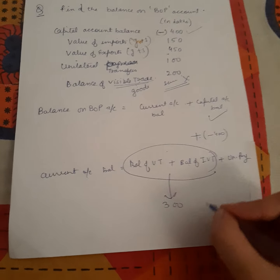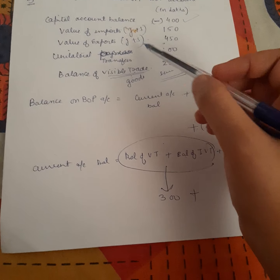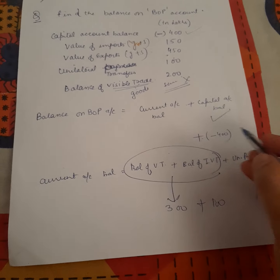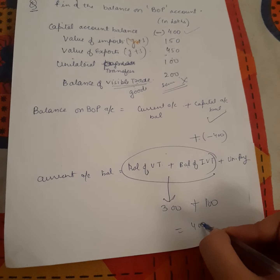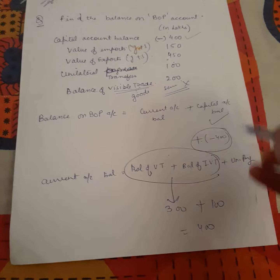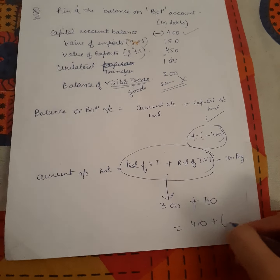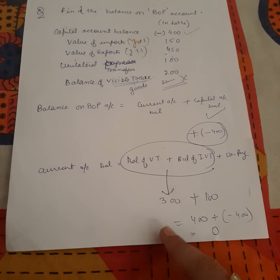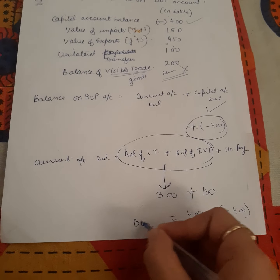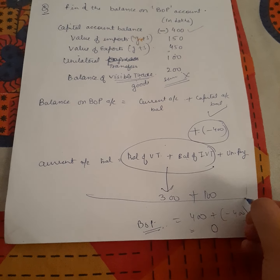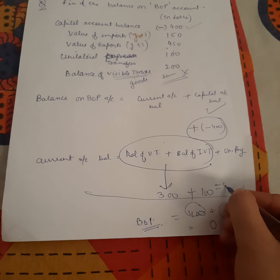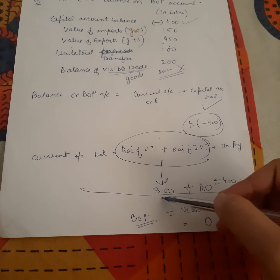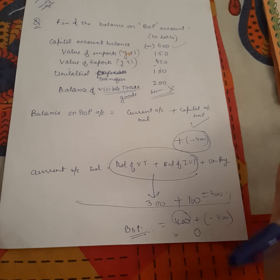Adding unilateral payments of 100, your current account balance is 400. Capital account balance is minus 400. So balance of payment account balance is zero. Current account balance was 400, capital account was minus 400, giving a BOP balance of zero. That's all with the numerical questions.